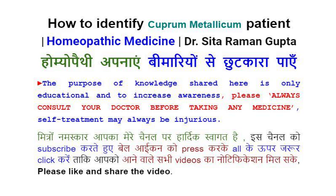Cuprum Metallicum identification symptoms: Spasms, convulsive tendency, or cramps — usually begin in fingers and toes by twitching, may be preceded by blindness. Thumbs clenched across palms, fingers drawn tightly and violently over thumbs, and difficult to open.